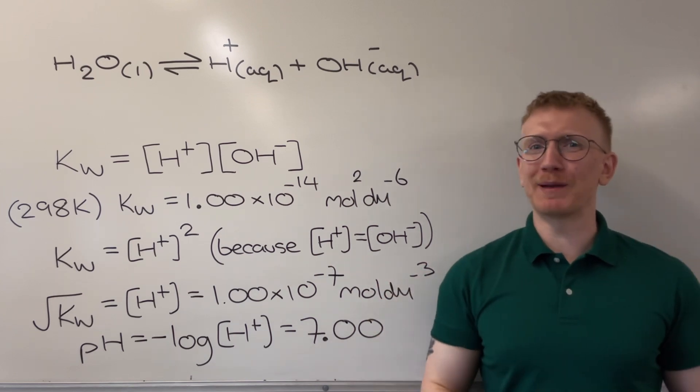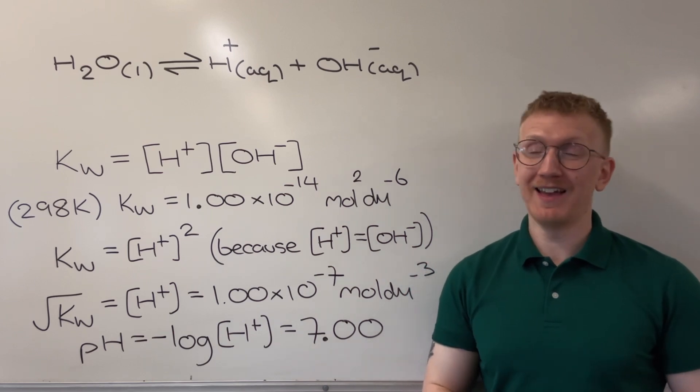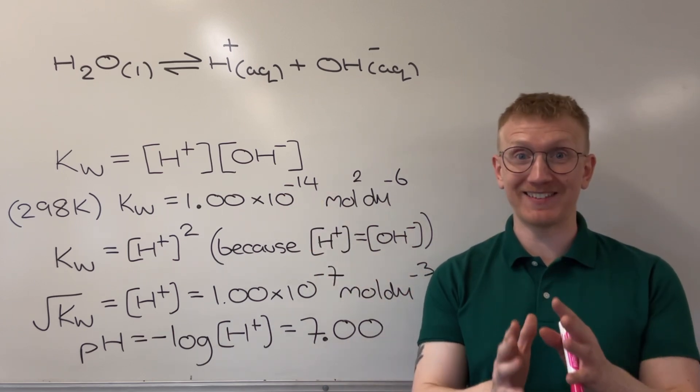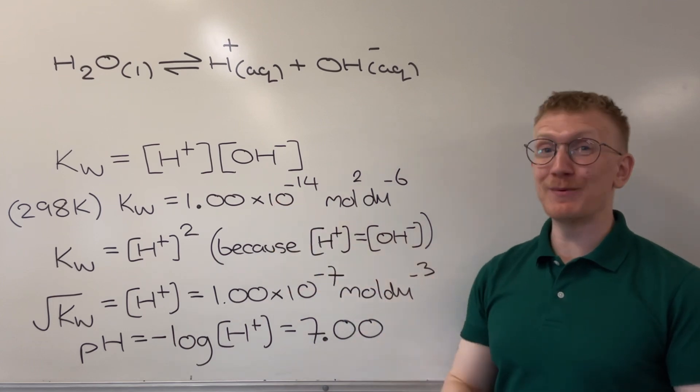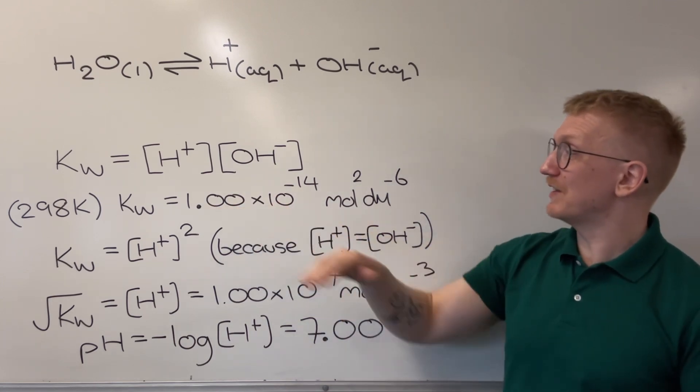If this was any other equilibrium constant, we'd have a lot to say about it. The thing we would say most is that this position of equilibrium must be very to the left hand side because that value is significantly less than 1. So what do we do with this number?